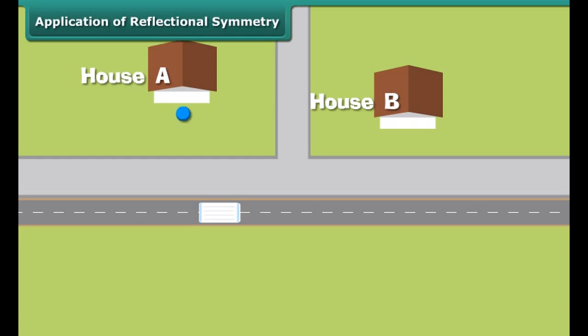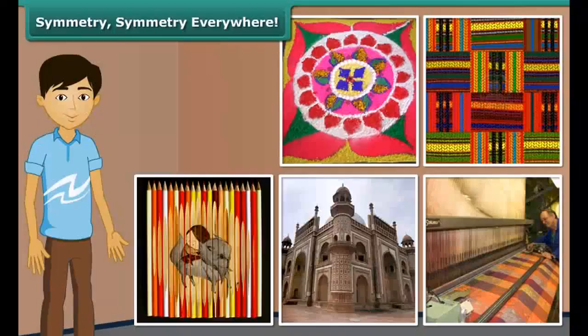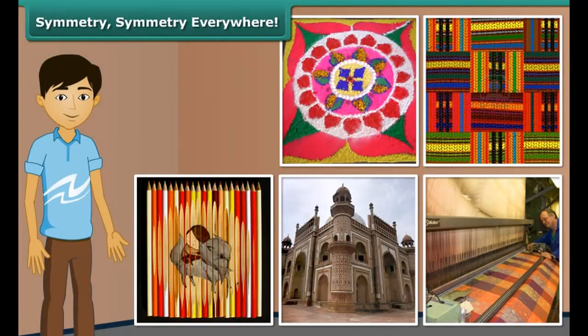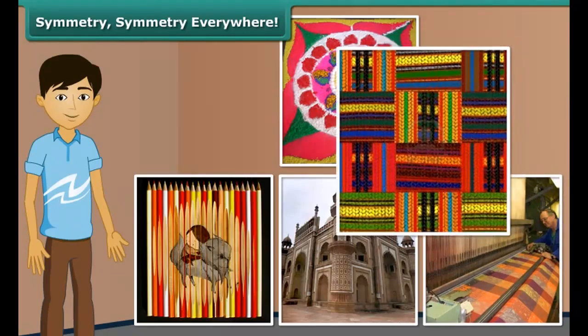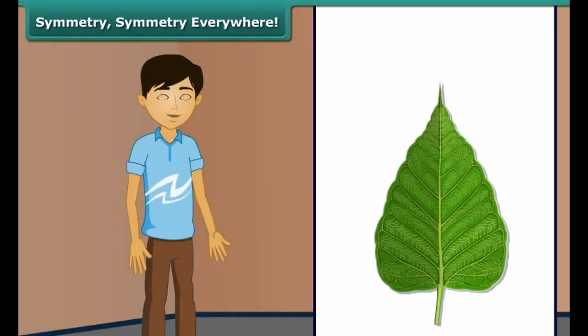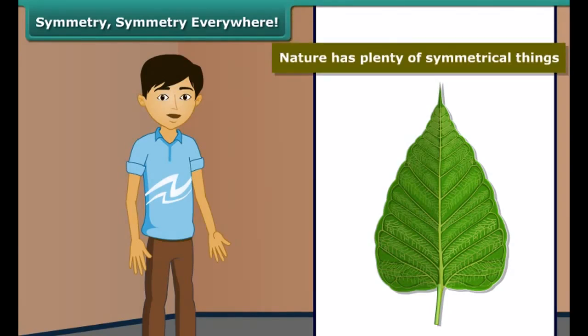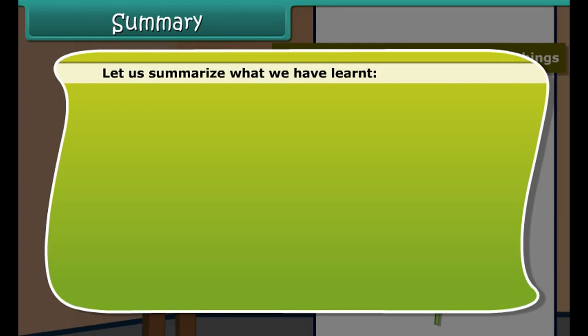Charm, a milkman, wants to park his van at some point on street and distribute milk to houses A and B. Can you suggest him where should he park his van so that his walking distance from the street to the houses A and B will be least? Let us find out. We can use reflectional symmetry here. Let A prime be the image of A in the mirror line, which is the street here. Now join the points A prime and B. You can see that at point B, the mirror line and A prime and B meet. Thus, point B is the ideal place for Charm to park his van.